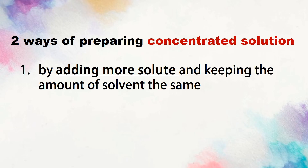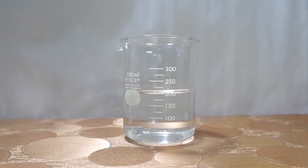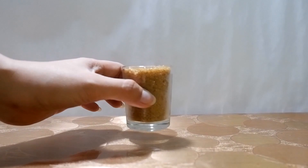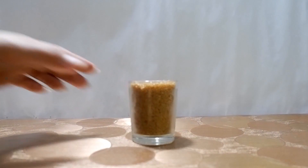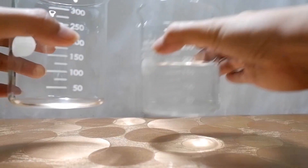The second way of preparing a concentrated solution is by reducing the amount of solvent and keeping the amount of solute the same. For example, the actual volume of water is 200 ml and the actual amount of sugar is one full small glass. If you want to make a concentrated solution, you reduce the amount of water. It now has more sugar relative to the solvent.